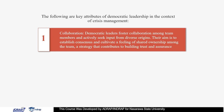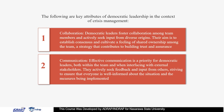The following are key attributes of democratic leadership in the context of crisis management. Collaboration: democratic leaders foster collaboration among team members and actively seek input from diverse origins. Their aim is to establish consensus and cultivate a feeling of shared ownership among the team, contributing to building trust and assurance. Communication: effective communication is a priority for democratic leaders both within the team and when interfacing with external stakeholders. They actively seek feedback and input from others, striving to ensure that everyone is well informed about the situation and the measures being implemented.